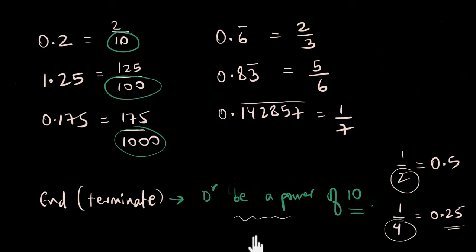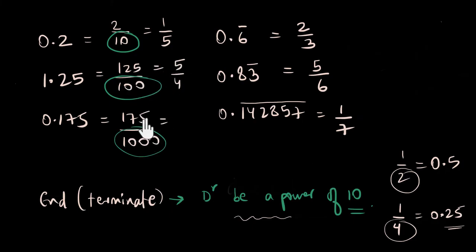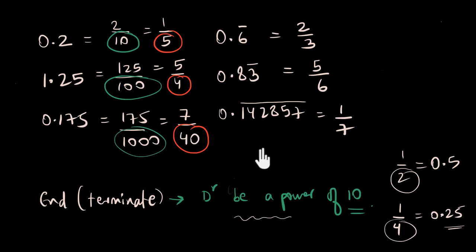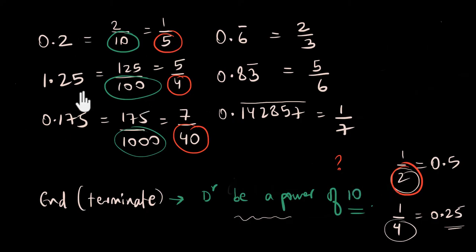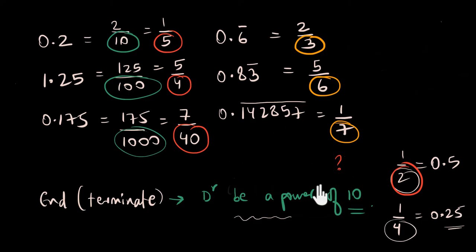If I simplify those fractions, 2 by 10 becomes 1 by 5, 125 by 100 becomes 5 by 4, and 175 by 1000 simplifies to 7 by 40. So I can see denominators 5, 4, and 40 popping up — none of which are powers of 10. What's so special about these denominators that give terminating decimals? What do 5, 4, and 40 have that 3, 6, and 7 don't? Pause and see if you can figure it out.